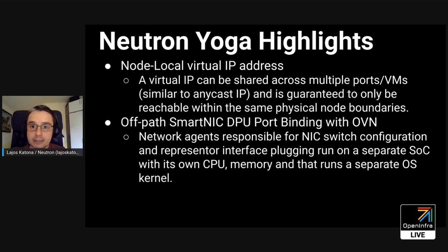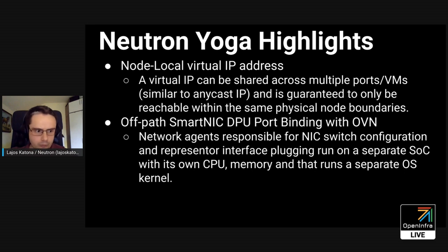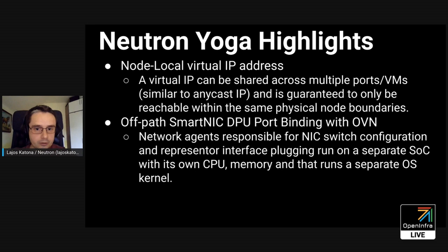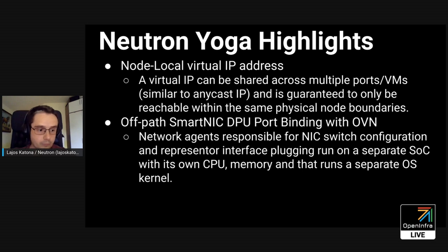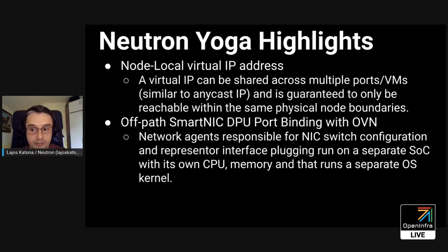Another big and really interesting feature is the off-path SmartNIC DPU with OVN. It was a really multi-project effort because it involved not just Neutron but also Nova, and even a project in OVN which is outside of OpenStack. So it was really a cross-project feature and effort. Now you can manage SmartNICs which have their own operating system and OVS running on them, and you can manage them from Neutron and schedule your VMs to use those with the help of Nova.